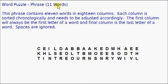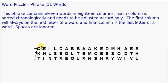But before we do, a little word puzzle on the screen. This contains a phrase of 11 words in these 18 columns. Each column is sorted chronologically and needs to be adjusted accordingly. So the C is either the first, second, or third column. The K, first, second, and third is the T. And all 18 of them — each of these letters, the C, K, and the T, must be the first letter of a word. And the last three, E, H, and L, must be the last three letters of a word. There are 18 words. Spaces are ignored, and I'll give you the answer to this puzzle at the end of the broadcast.